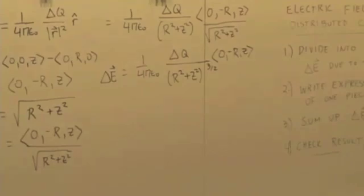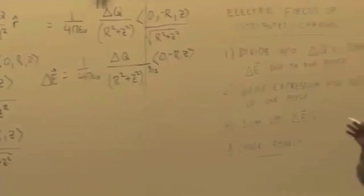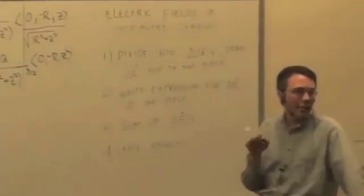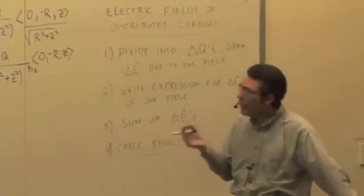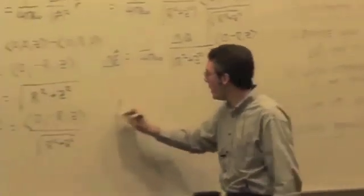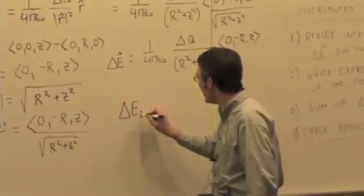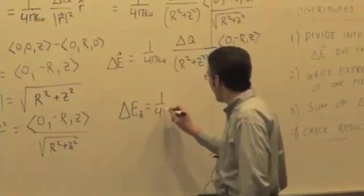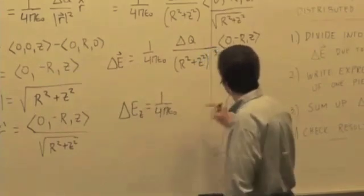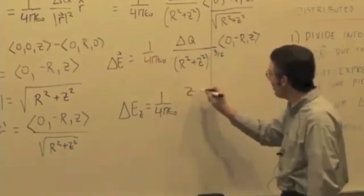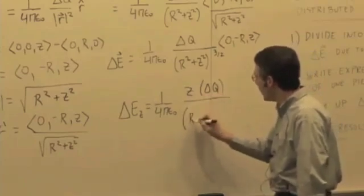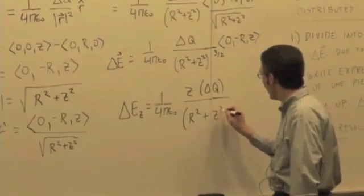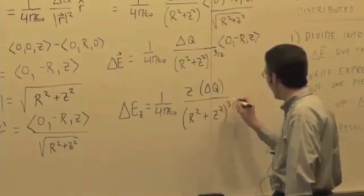Are we okay so far? So then we already said that only the z component matters because all the x's and y components are going to cancel out. So I'm just going to worry about the z component. And the z component of this thing, delta e sub z, is 1 over 4 pi epsilon 0, z times delta q over R squared plus z squared to the three halves power.